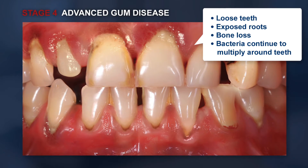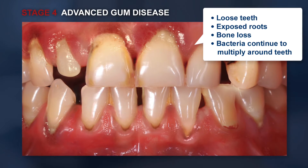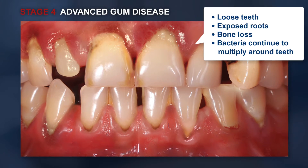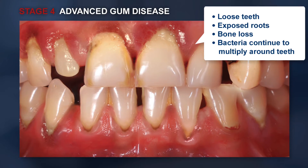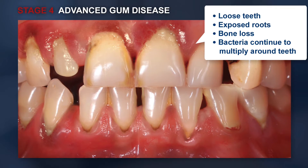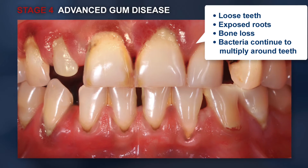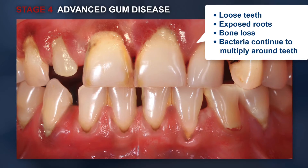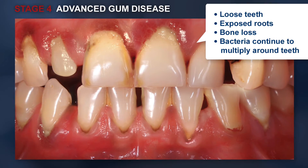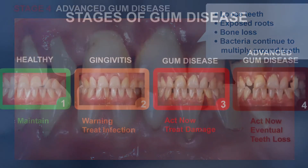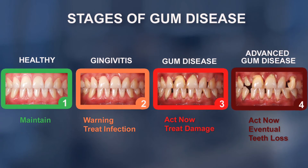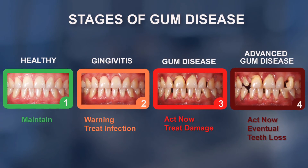Bacteria and their toxins will now invade the blood vessels in the gum tissue and travel to vital organs. In addition to scaling and root planing and an application of a local antibiotic, some teeth may need to be extracted and a consultation with a periodontist, or gum specialist, may be scheduled for further regenerative procedures.